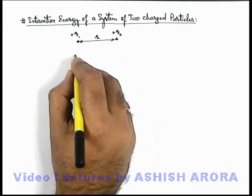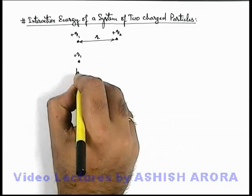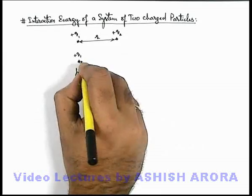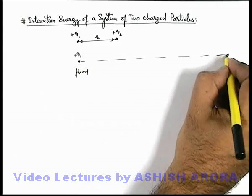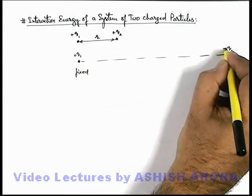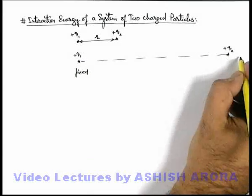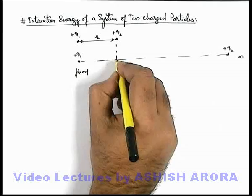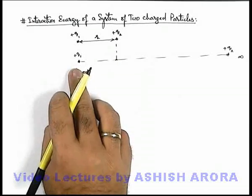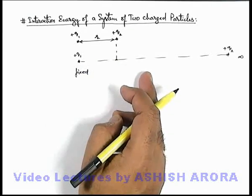Let us first consider that this q1 charge is fixed at rest and the other charge q2 is located at infinity. It is brought close to q1, then whatever work is done in bringing it from infinity to this location at a distance r from q1 will be defined as the interaction energy of the system or electric potential energy of the system of these two charges.